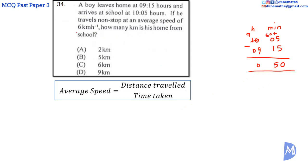Average speed has units km per hour. Therefore, we need the distance in km and the time in hours. We are asked to find the distance in km and we have the time in minutes. So we need to convert minutes to hours. We have 60 minutes in 1 hour. So 50 minutes is equal to 50 divided by 60 hours.